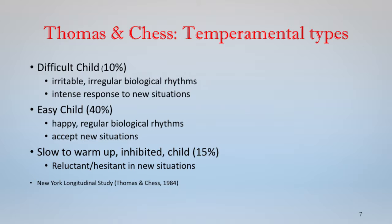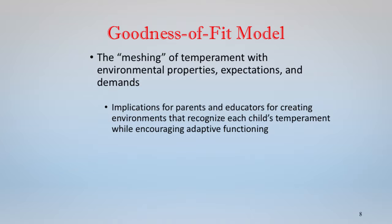The other critical concept Thomas and Chess talked about — and it's really critical when we think about temperament and individual differences — is this idea of goodness of fit. I'll have more to say about that later, but they actually thought that the meshing of the environment and the child's temperament created the caregiving situation that drove parent-child interactions. They also talked about how a child's temperament could mesh with a teacher's or preschool educator's temperament in defining the learning environments children grow up in.